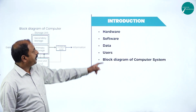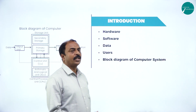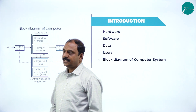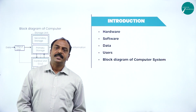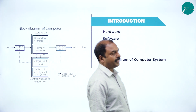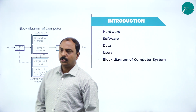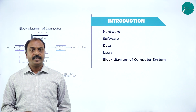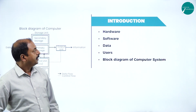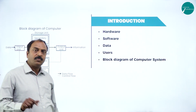Next definition is data. Data is nothing but raw facts before processing — all are nothing but data. A computer is a data processing system. It processes the data and we get the result at the end, which is called information. Please do not confuse the definition of data and information — those two are different terms. Data is before processing and information is after processing.